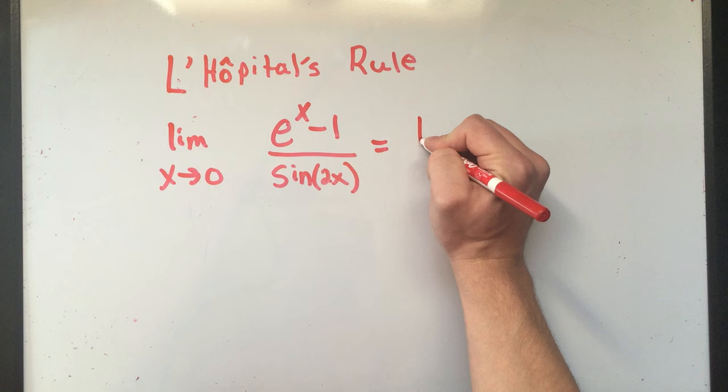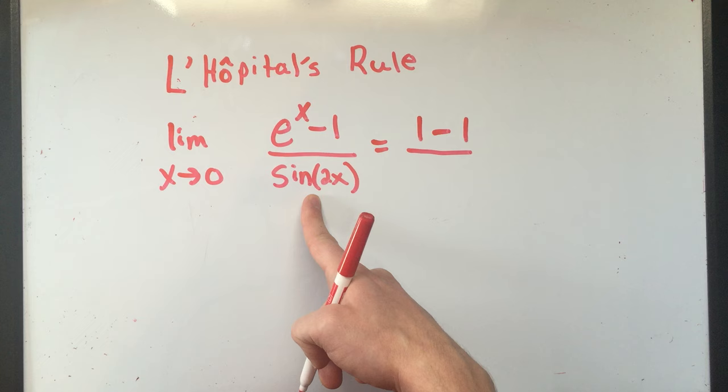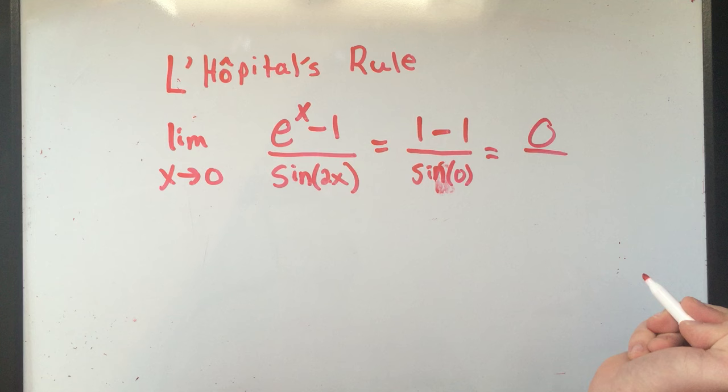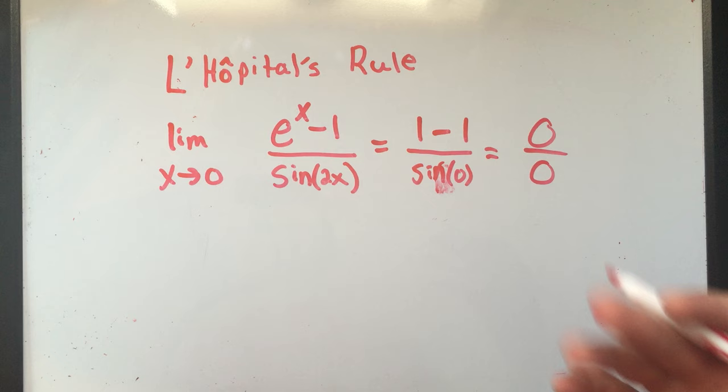I just plug in the number and see what happens. So if I plug in 0 for x, that'll be e to the 0 - anything to the 0 is 1 - so that's 1 minus 1, over sin of 0. So 1 minus 1 is 0, and sin of 0 is 0. I get 0 over 0, that means I can use L'Hôpital's Rule.